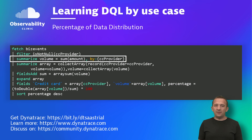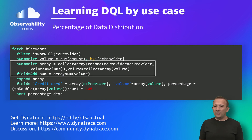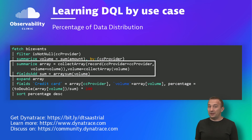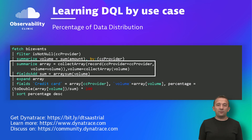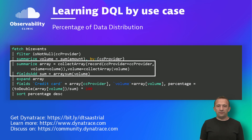First, I am summarizing the revenue by credit card provider. To calculate the overall revenue, you need to use another summarize and store the credit card provider revenue in an array, then add a new field sum which contains the total revenue.